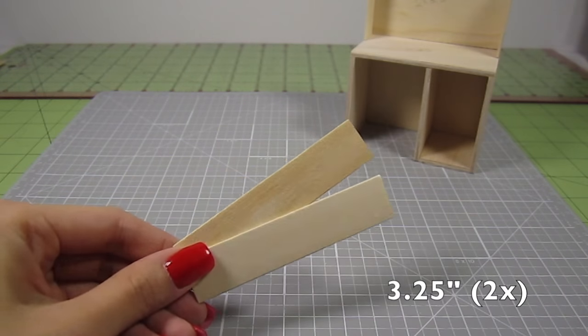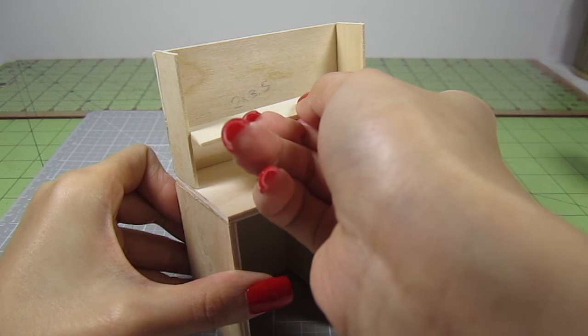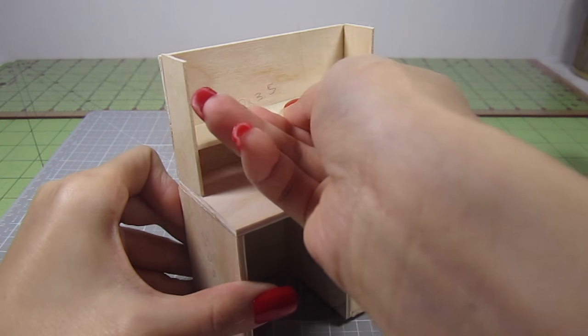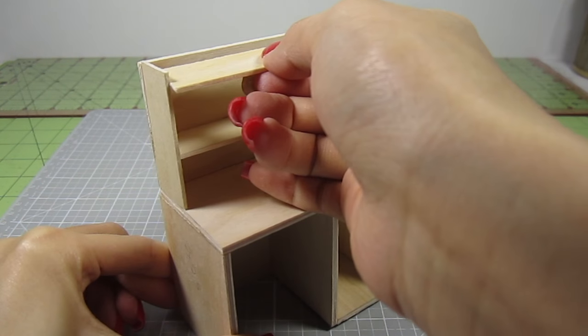Then cut out 2 3 1⁄4 inch sections for more popsicle sticks. These will be the shelves for the bookshelf. Place 1 3⁄4 inch from the top of the desk and the other one 1⁄4 inch from the top.